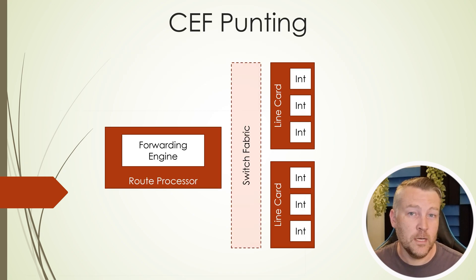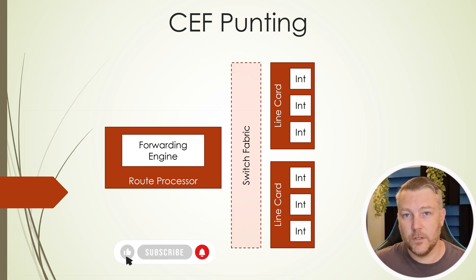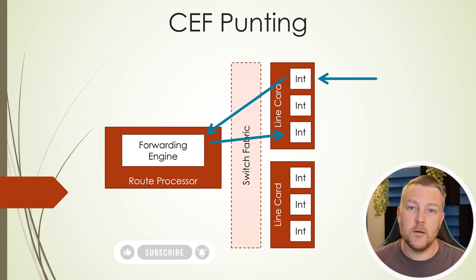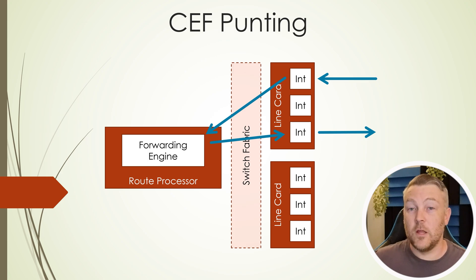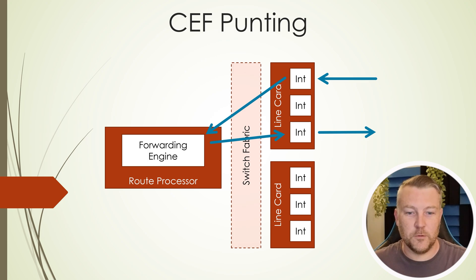Occasionally, though, a packet will come in that the router doesn't know how to handle using CEF. When this happens, it is punted to the route processor for special handling. This is a slower process, so hopefully the router will use this as little as possible.